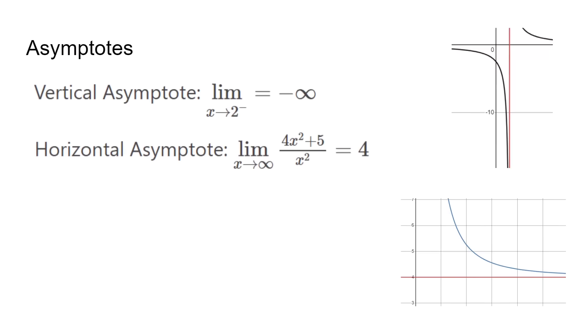When a limit equals infinity, this means that there is a vertical asymptote. The function continues increasing forever and never reaches the point. This is shown in the graph. However, limits to infinity are horizontal asymptotes. In this instance, the graph approaches 4 as x approaches infinity, but will never reach it.